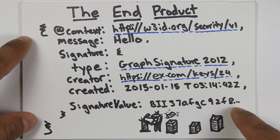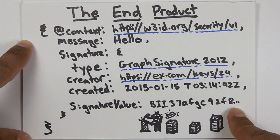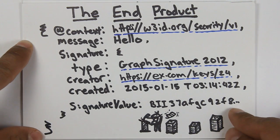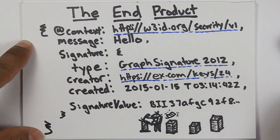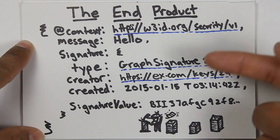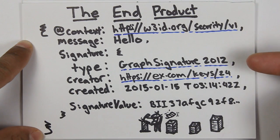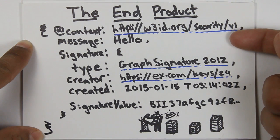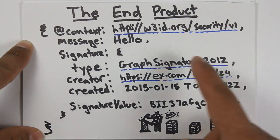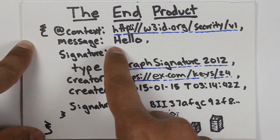So the technology that we're going to discuss today is called linked data signatures. Before we get into how a linked data signature is actually created, let's just take a look at what the end product looks like. This is a JSON-LD message. Linked data is basically a way of expressing data that's easy for developers to use and easy for machines to understand. The basic message that we're going to send today is just hello.